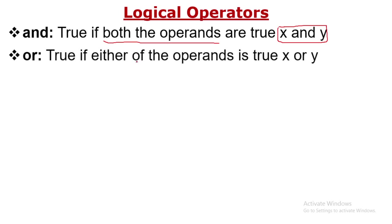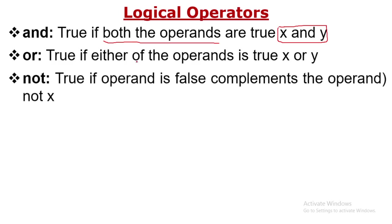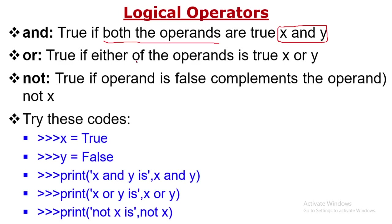The OR operation returns false only when both operands are false; in the other three cases it returns true. NOT performs the complement of the value — if x is true, then NOT x returns false. Try this code, print the values, and put your comments in the comments box with the results.